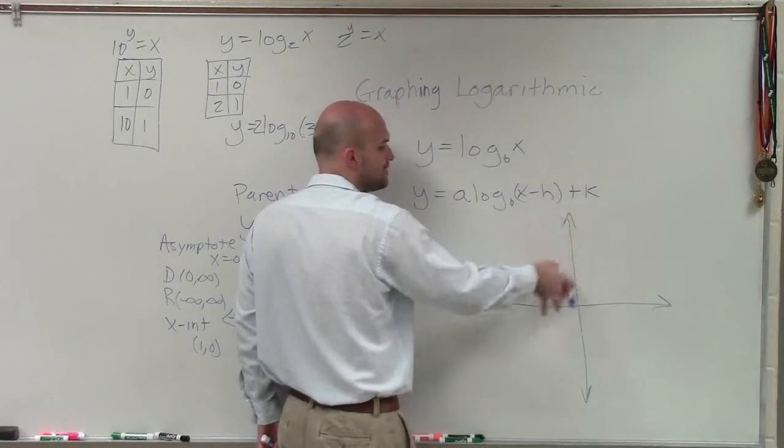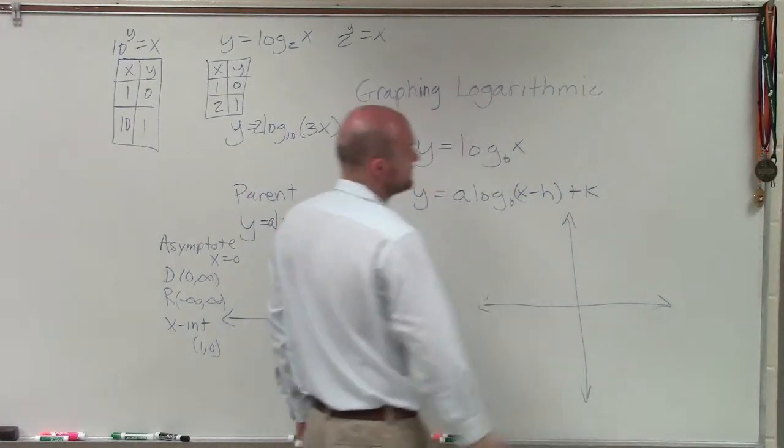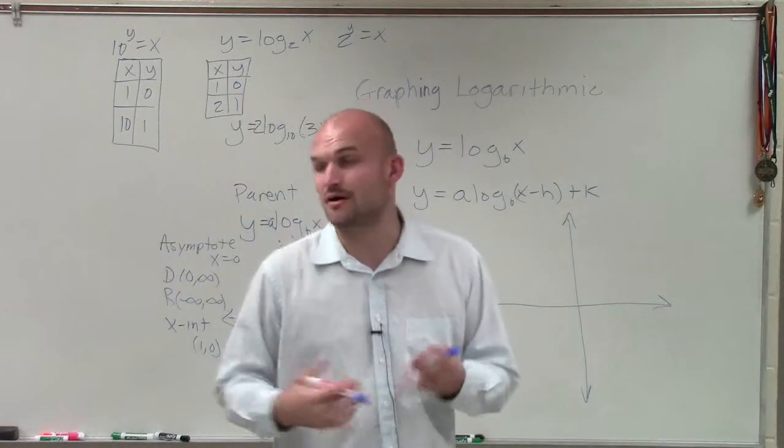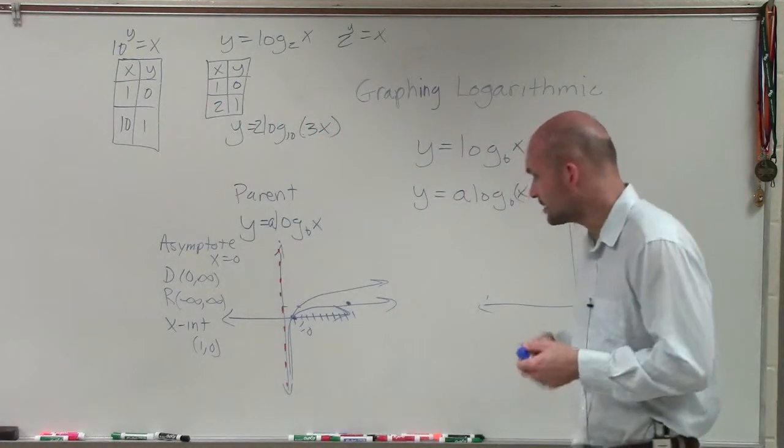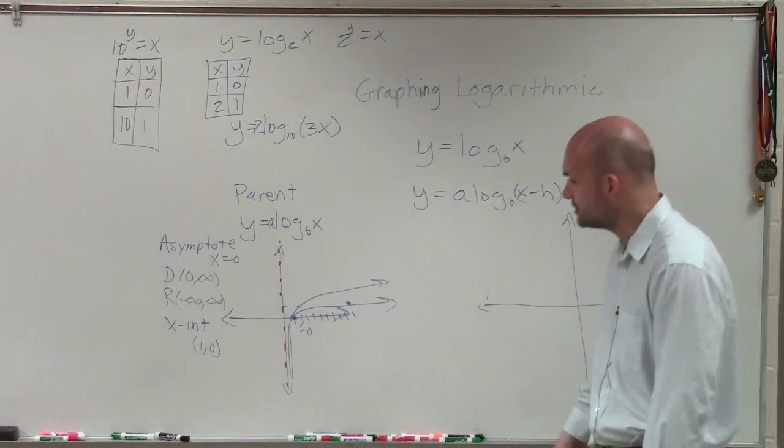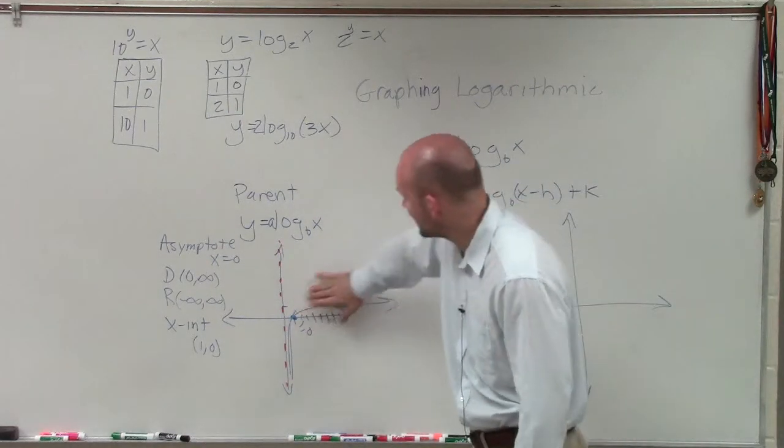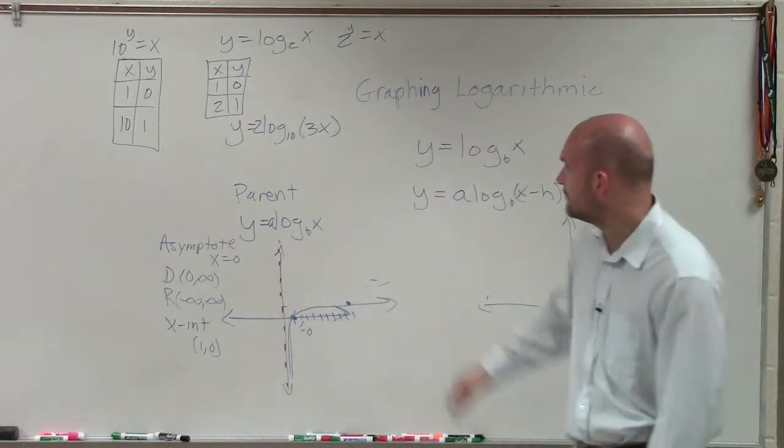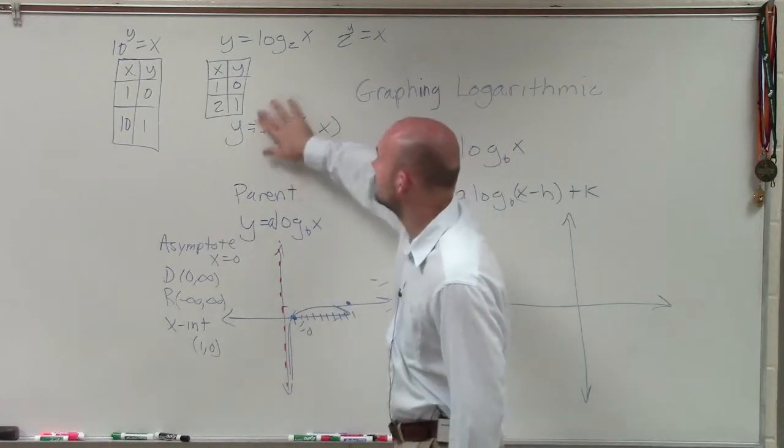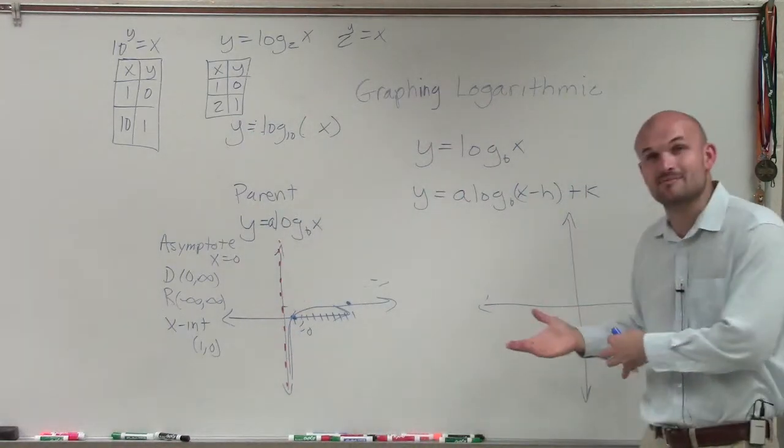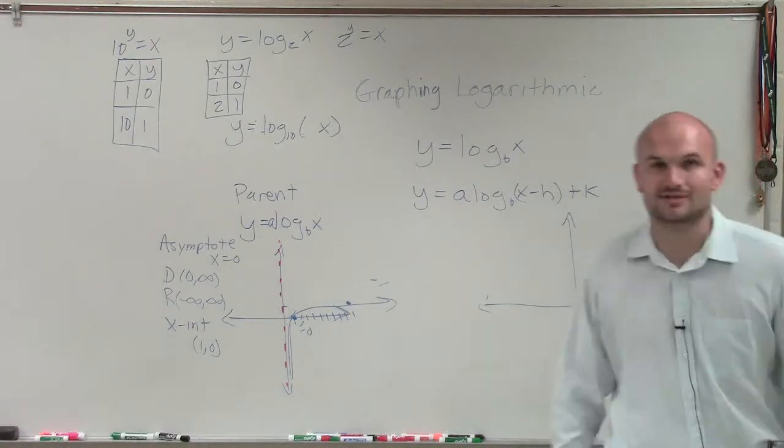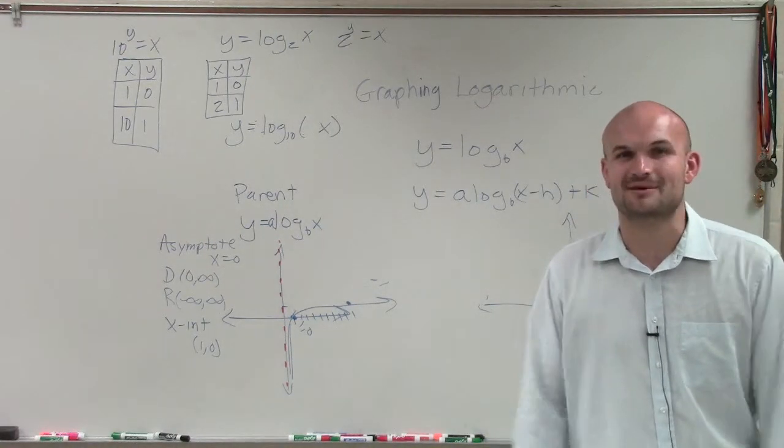When k is positive, you shift up. When k is negative, you're going to shift down. So there we go, ladies and gentlemen. That's just a brief review of how we're going to graph your logarithmic equation. Here's just one example of log base 10 of x. And then what we're going to do is apply whatever transformations in my examples to be able to finish off the rest of the graphs. So therefore, I hope that helped. Thanks so much. Bye.